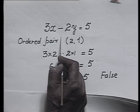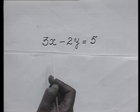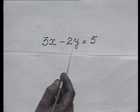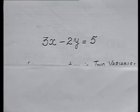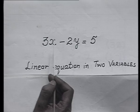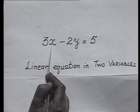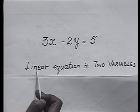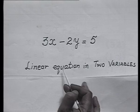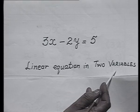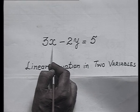Only that ordered pair will be taken as the solution of the equation which satisfies the given equation or which turns the given equation into a true statement. The equation 3x minus 2y equals 5 has two variables, x and y, and we call it a linear equation in two variables.